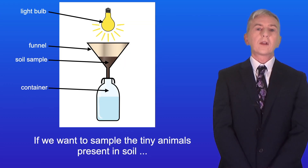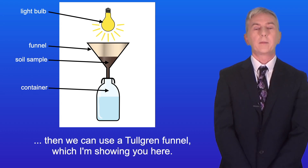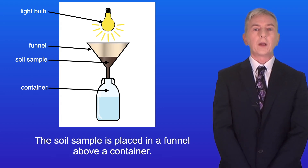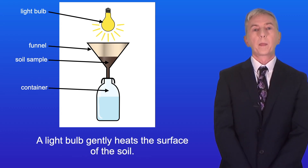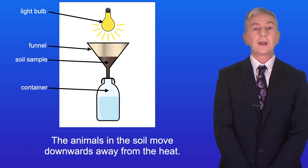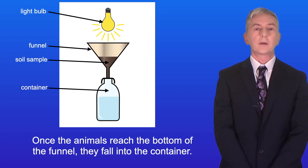If we want to sample the tiny animals present in soil then we can use a Tullgren funnel which I'm showing you here. The soil sample is placed in a funnel above a container and a light bulb gently heats the surface of the soil. The animals in the soil move downwards away from the heat. Once the animals reach the bottom of the funnel they fall into the container.